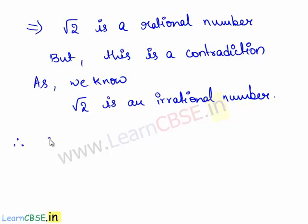Therefore, 6 plus root 2 is an irrational number.